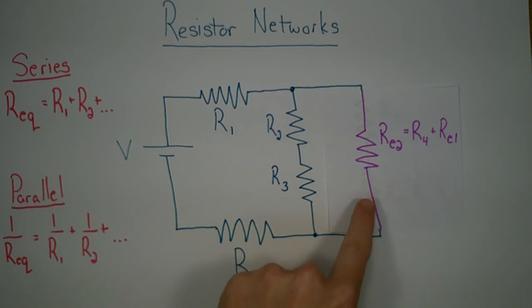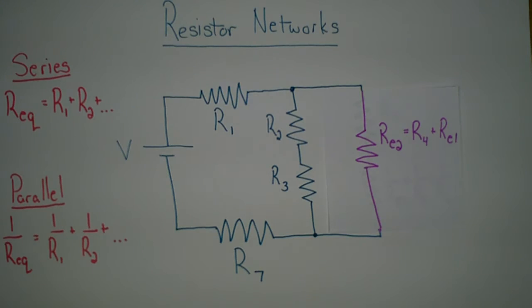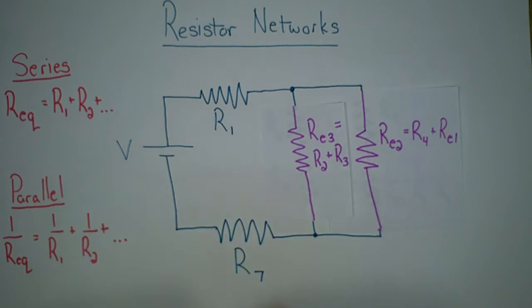Our next step is to look at R2 and R3, which are in series with each other. In order to come up with an equivalent resistance for those, we'll have RE3, which equals R2 plus R3.